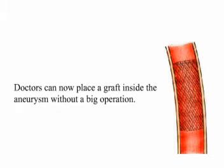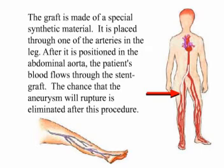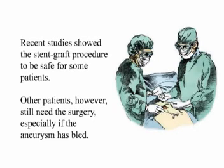Alternative Treatment. Doctors can now place a graft inside the aneurysm without a big operation. The graft is made of a special synthetic material and is placed through one of the arteries in the leg. After it is positioned in the abdominal aorta, the patient's blood flows through the stent graft. The chances that the aneurysm will rupture are eliminated after this procedure. Recent studies showed the stent graft procedure to be safe for some patients. Other patients, however, still need surgery, especially if the aneurysm has blood.